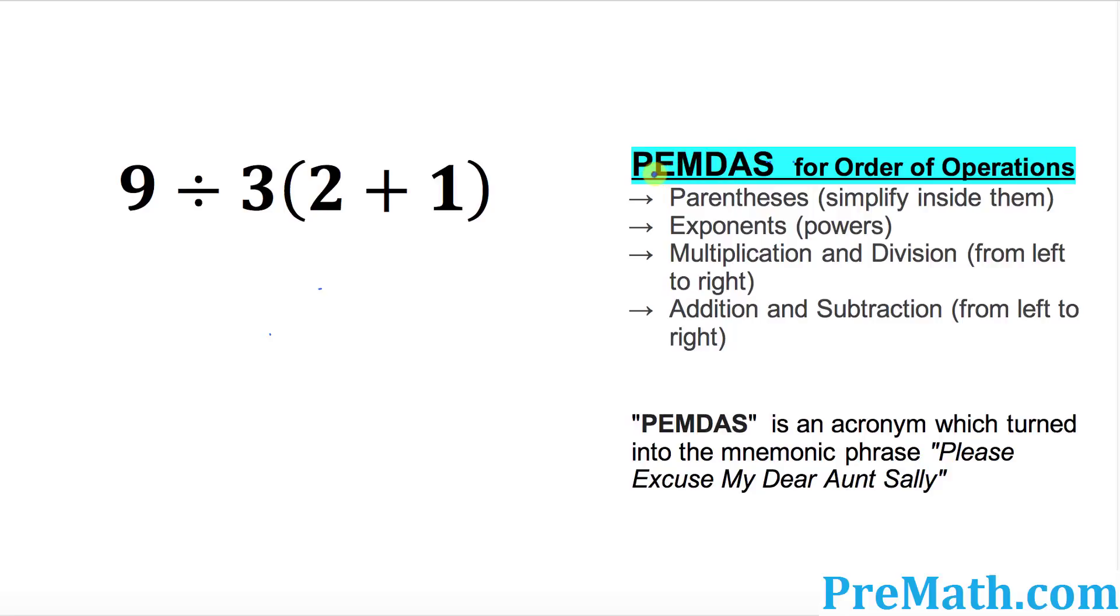PEMDAS - P stands for parentheses, E for exponent, M for multiplication, D for division, A for addition and S for subtraction. That pretty much means that always parentheses would come first, then exponents, multiplication and division after that, and finally addition and subtraction.